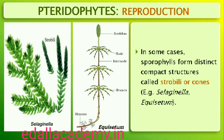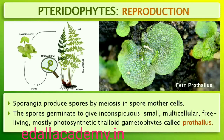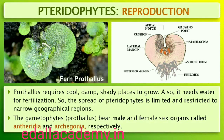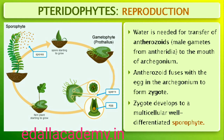The sporangia produce spores by meiosis in spore mother cells. The spores germinate to give rise to inconspicuous, small but multicellular, free-living, mostly photosynthetic thaloid gametophytes called prothallus. These gametophytes require cool, damp, shady places to grow. Because of this specific restricted requirement and the need for water for fertilization, the spread of living pteridophytes is limited and restricted to narrow geographical regions. The gametophytes bear male and female sex organs called antheridia and archegonia respectively. Water is required for transfer of antherozoids — the male gametes released from the antheridia — to the mouth of the archegonium. Fusion of the male gamete with the egg present in the archegonium results in the formation of the zygote.